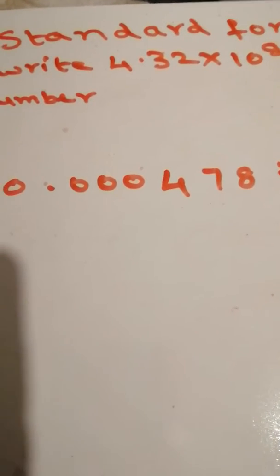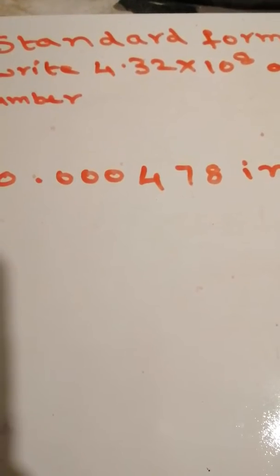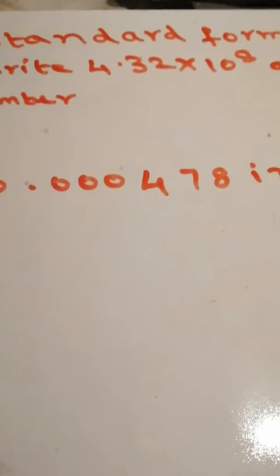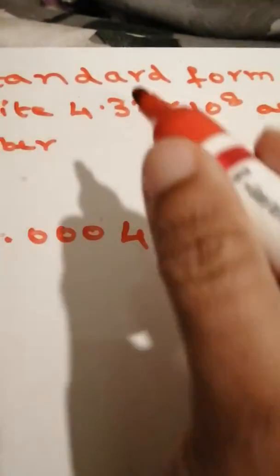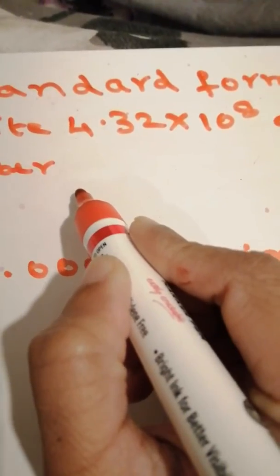Everyone, welcome back to my channel. Today I am telling you about standard form. This is one of the topics in GCSE maths. Write 4.32 into 10 to the power of 8 as an ordinary number.